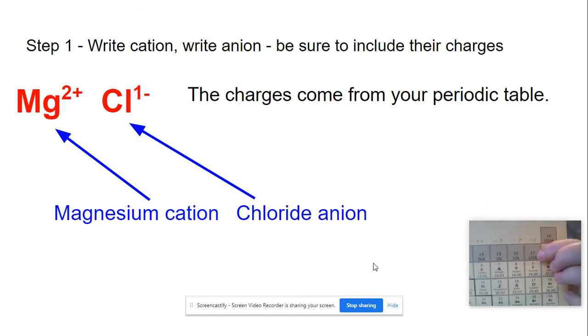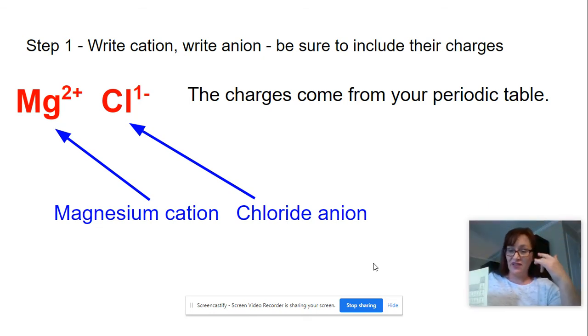And nonmetals always gain valence electrons when they form ions, and they want to create a stable octet. So it needs to have 8 electrons to be stable, so it's going to gain 1 electron. That means that its charge is going to be a 1 minus. Remember, electrons are negative.